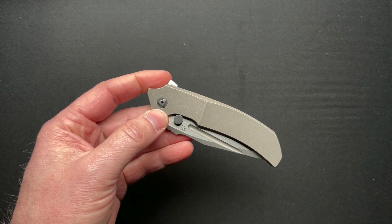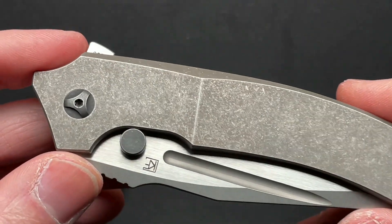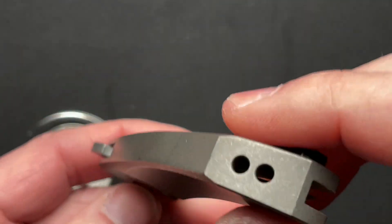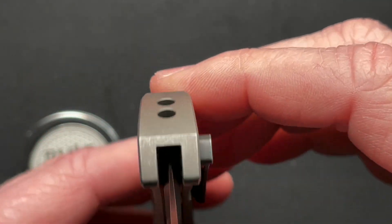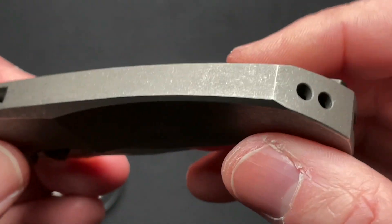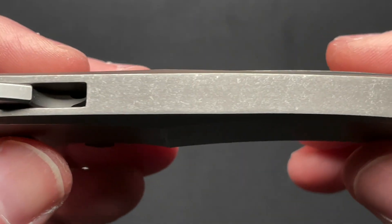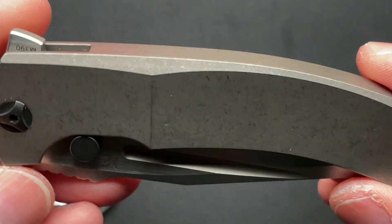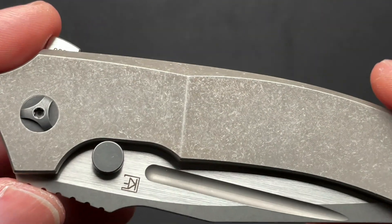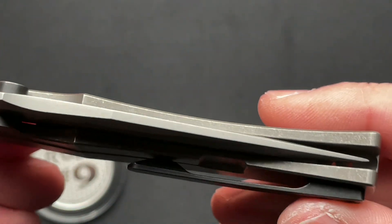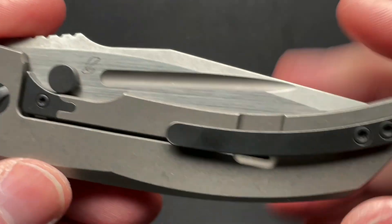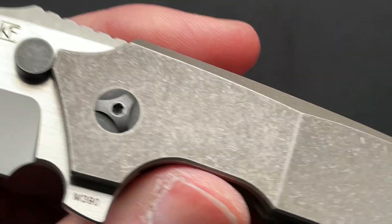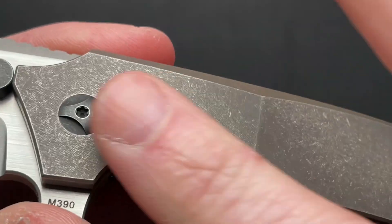So let's just zoom in on this because it is very cool. Really nice, just kind of tumbled titanium. The most interesting part is this is an integral, however you want to say it. The handle scales, quote unquote, is one solid chunk of titanium. The lock bar, like I mean everything. I am just always amazed how that comes to be. One solid piece.